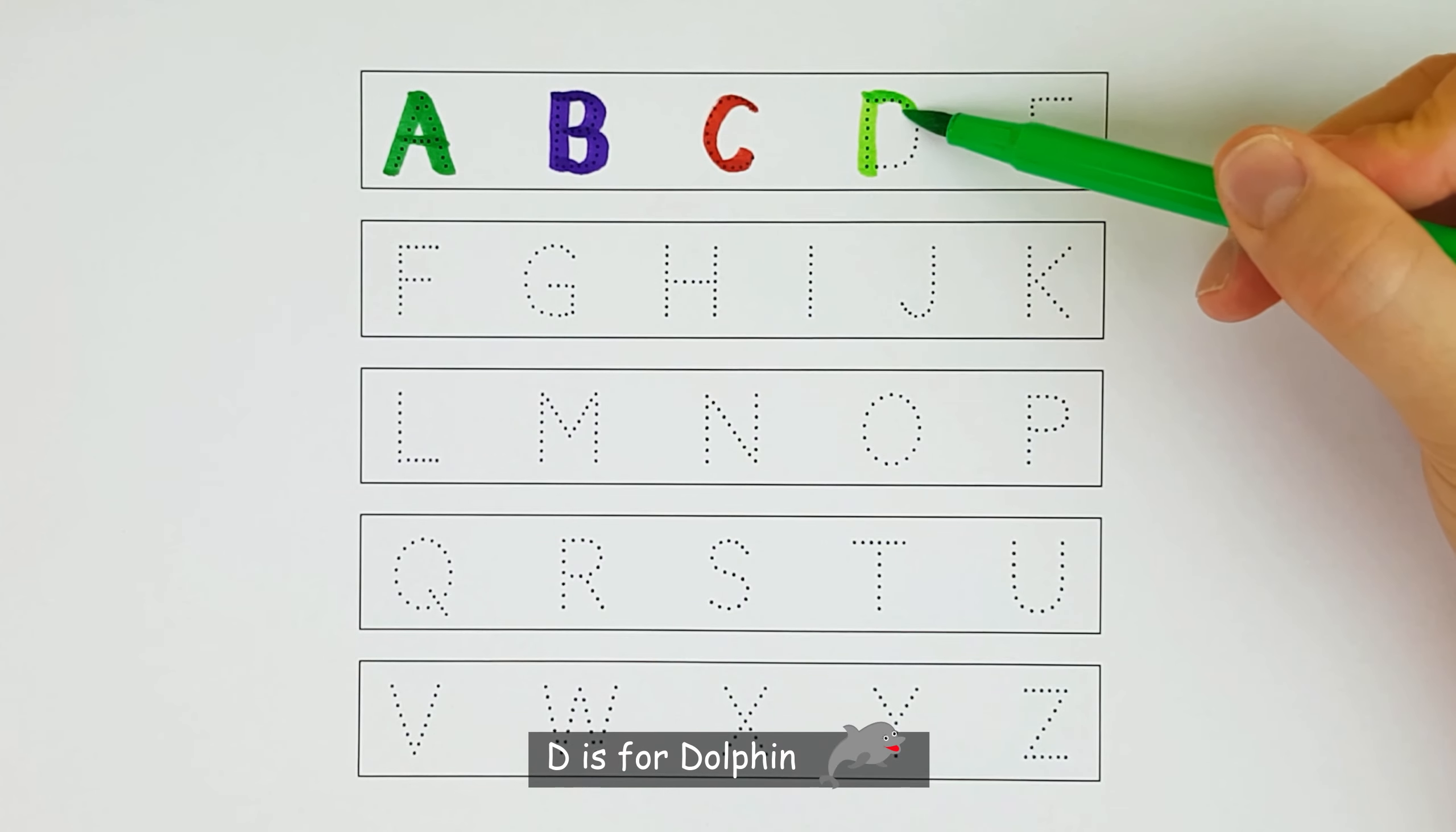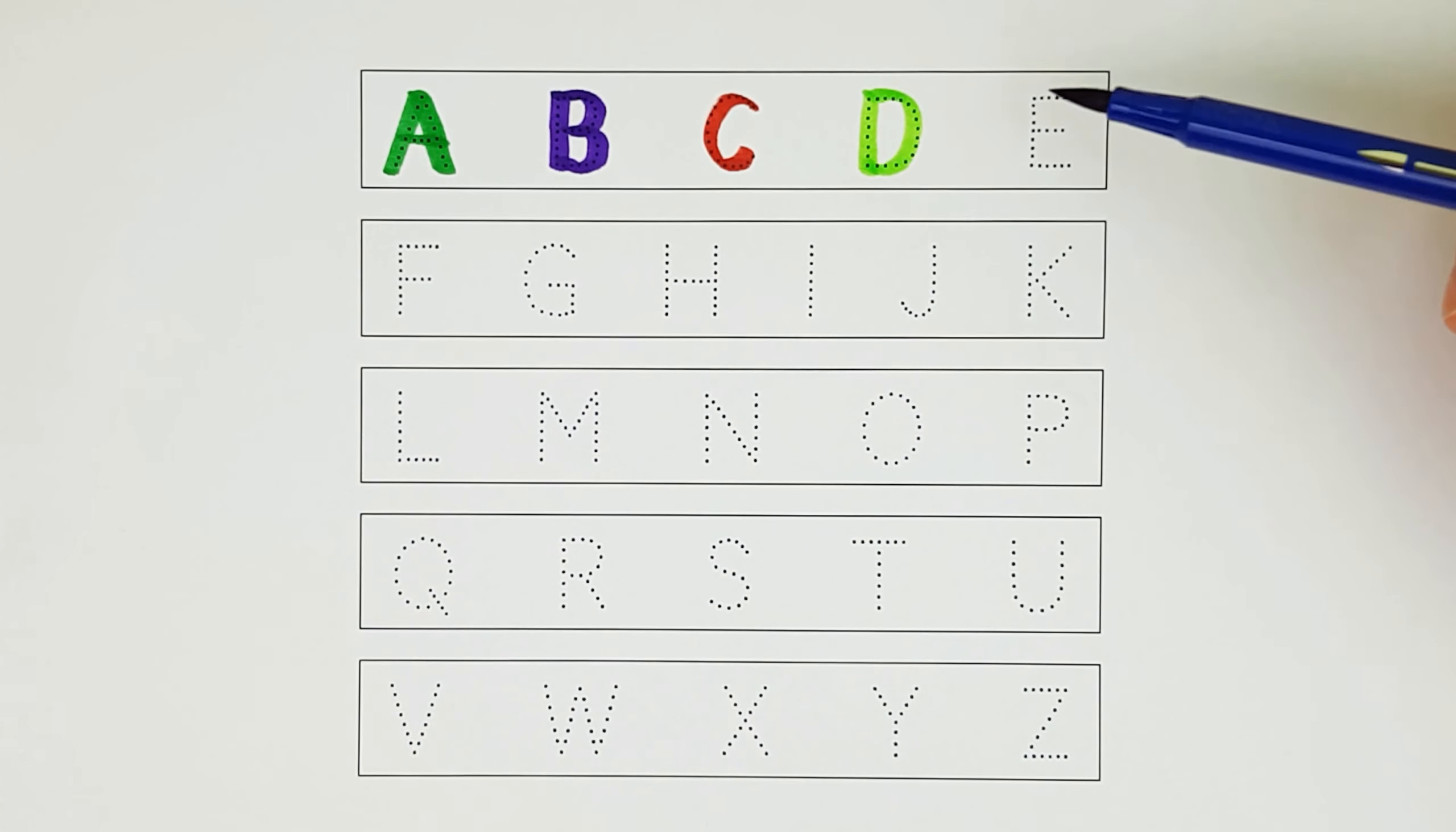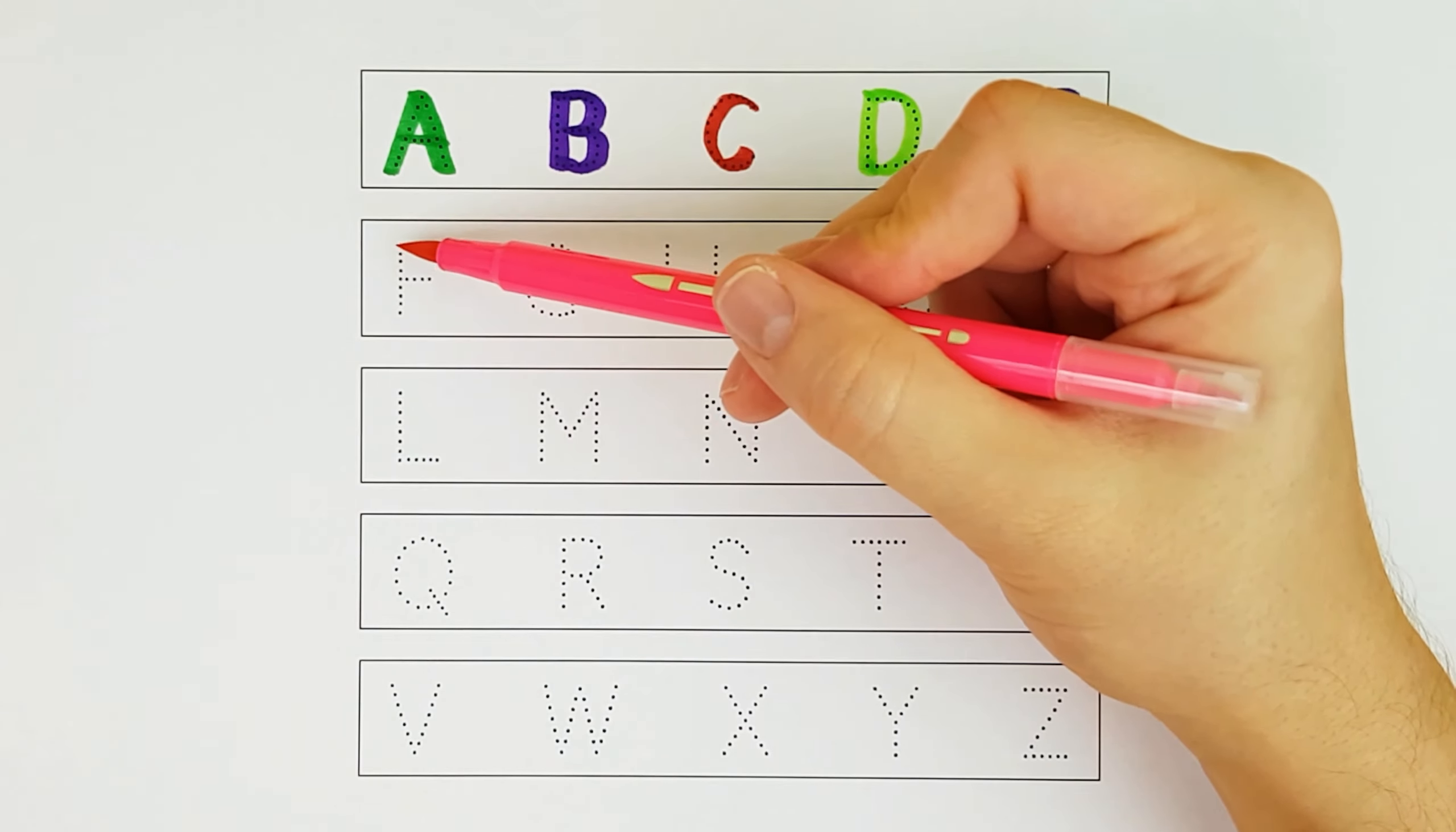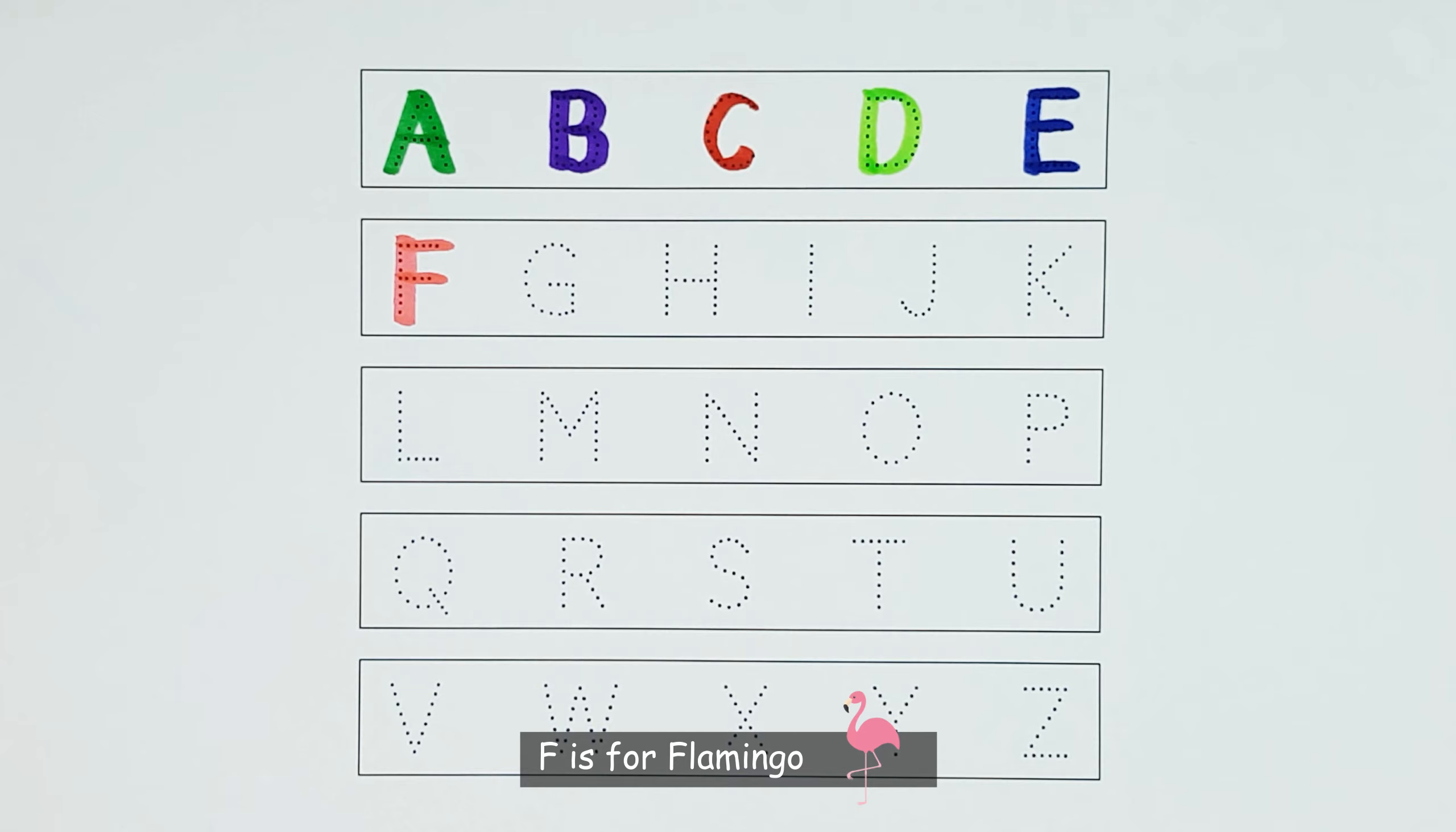D. D is for Dolphin. E. E is for Eagle. F. F is for Flamingo.